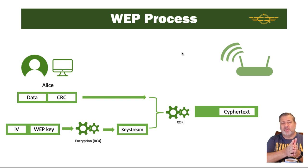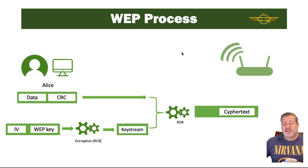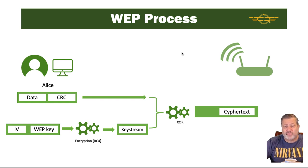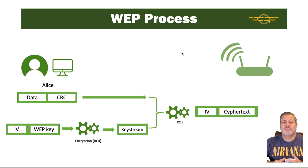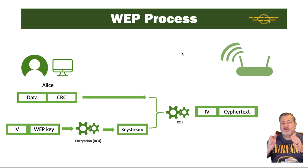One of the big problems is that we had to also send the initialization vector with the ciphertext, because the receiving end needs it to decrypt. So we have to append the IV in plain text to the ciphertext going across the network. That's one of the first problems — the initialization vector is in plain text alongside our ciphertext.